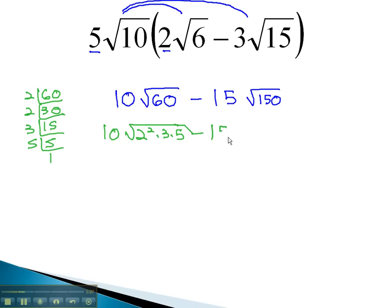Minus 15 times the square root of... Again, we will find the prime factorization of 150 by dividing by 2 to get 75, by 3 to get 25, by 5 to get 5, and by 5 to get 1. 150 is 2 times 3 times 5 squared.